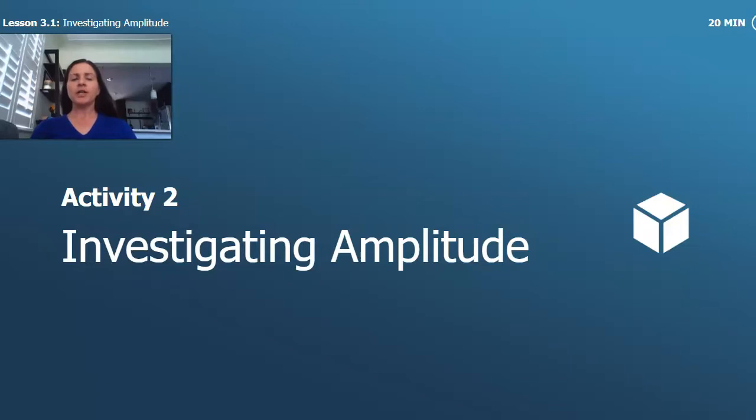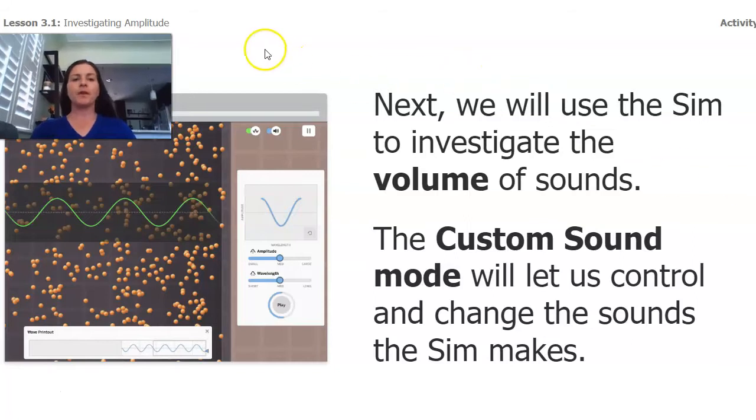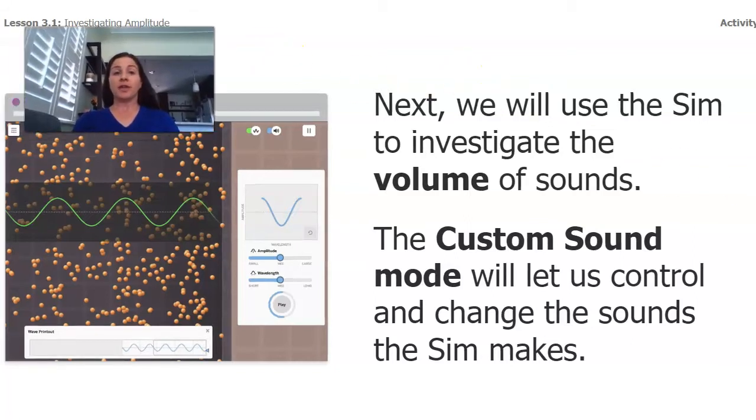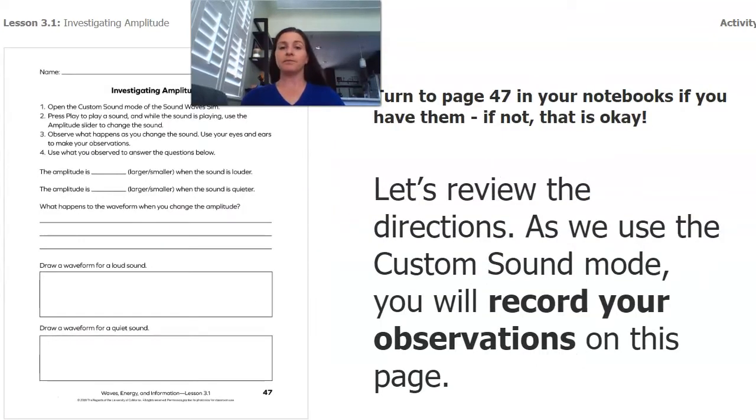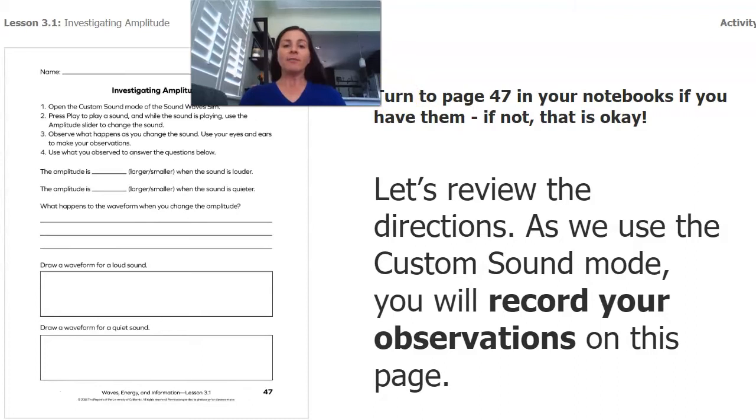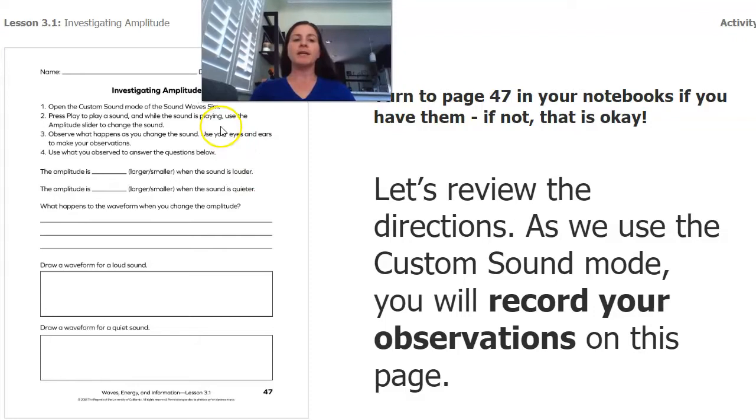And so we're actually going to play around with that, that whole loud and quiet thing. We're going to use the sim to investigate the volume of some sounds. Now we're going to use a setting called custom sound mode. It's going to let us control and change the sounds that the sim makes. If you have access to the student apps, you are always welcome to investigate this along with me. If you have page 27, if you've got your student investigation notebook, you can turn to it because there are some observations that you can make during it.